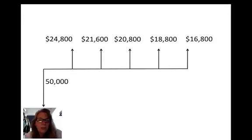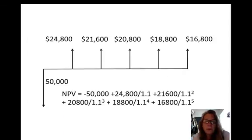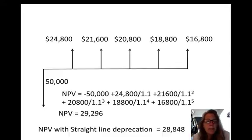Given this cash flow, what does that mean for present value? Taking each one and discounting it back to present value, the NPV of this cash flow is $29,296, which is higher than the previous video.